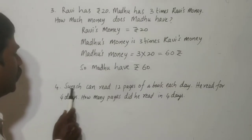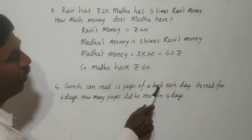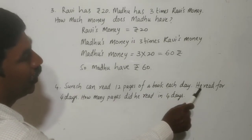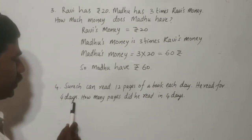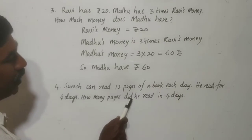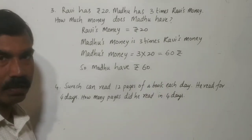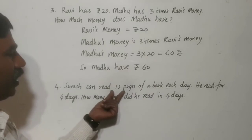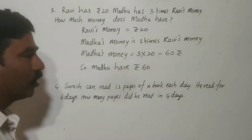Fourth problem. Suraj can read 12 pages of a book each day. He read for 4 days. How many pages did he read in 4 days?